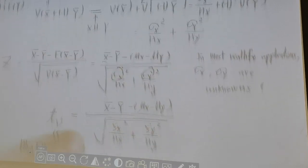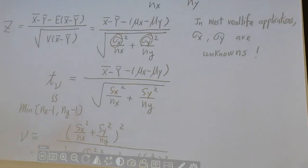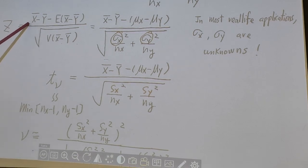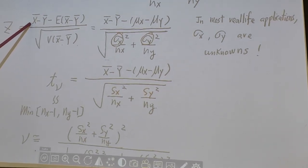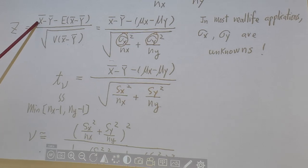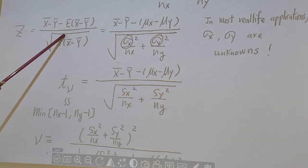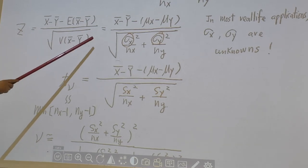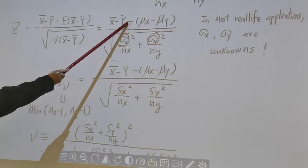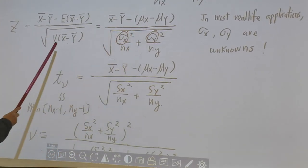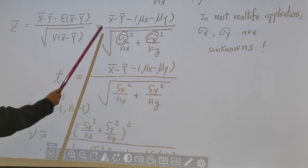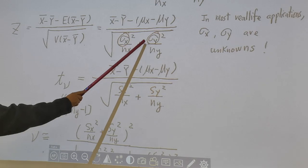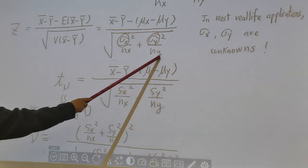Now, next one. If we standardize our test statistic x-bar minus y-bar, subtract by its mean, divided by standard deviation, we convert to z-score. So x-bar minus y-bar minus mu x minus mu y over square root of sigma x squared over nx plus sigma y squared over ny.